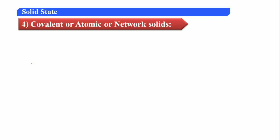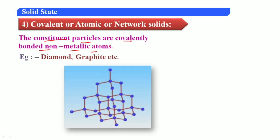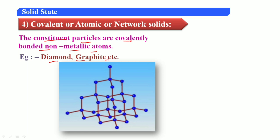Fourth type: covalent or atomic or network solids. The constituent particles are covalently bonded non-metallic atoms. Examples include diamond and graphite — all these are covalently bonded non-metallic atoms. This fourth type of crystalline solid is called covalent, atomic, or network solid.